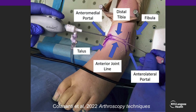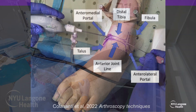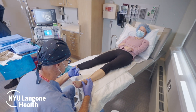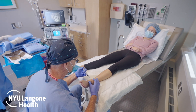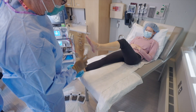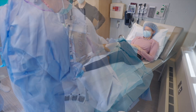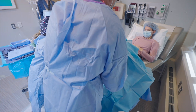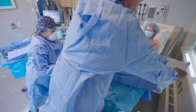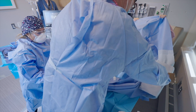Standard portals and anatomic landmarks are shown here. The anteromedial portal is made at the level of the joint just lateral to the tibialis anterior tendon, and the anterolateral portal is made under direct visualization taking care to avoid the superficial peroneal nerve. The patient is positioned comfortably in the supine position, local anesthetic is delivered into the portal sites and intra-articularly, and the patient is prepped and draped in sterile fashion while ensuring they can view the arthroscopy monitor.